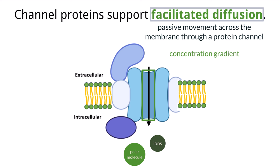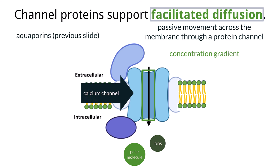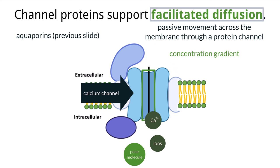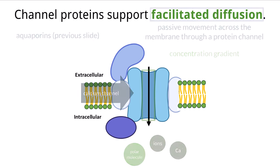Examples of protein channels for facilitated diffusion include the aquaporins we discussed and calcium channels. Calcium ions cannot move directly through the cell membrane and therefore require the help of a protein channel to passively move. These calcium protein channels can be in an open or closed state depending on a voltage factor.